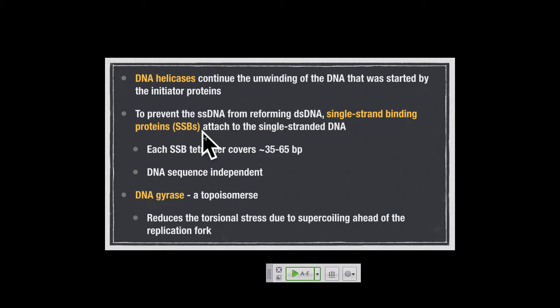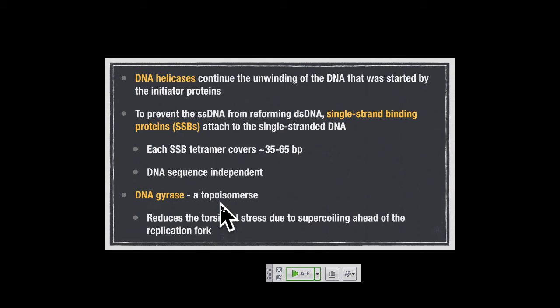Single-strand binding proteins have no enzymatic activity — think of them like a molecular doorstop. They coat the single-stranded DNA to keep it from forming its double-stranded structure long enough for DNA synthesis to happen. They function as a tetramer, covering about 35 to 65 base pairs of DNA. The other key enzyme is DNA gyrase, a topoisomerase that helps relax the supercoiling generated by the unwinding of the helix. A mutation in DNA gyrase would be lethal because the DNA can't replicate.